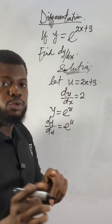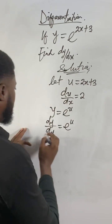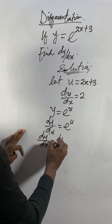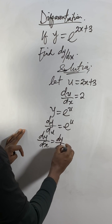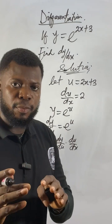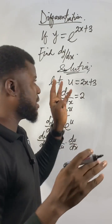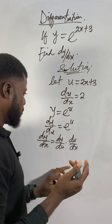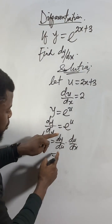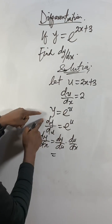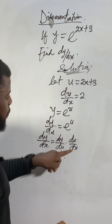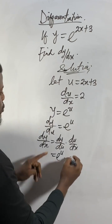Apply the formula of the chain rule, also called function of a function: dy over dx equals dy over du, multiplied by du over dx. So dy/du is e^u, and du/dx is 2. Putting them together: dy/dx equals e^u times 2.